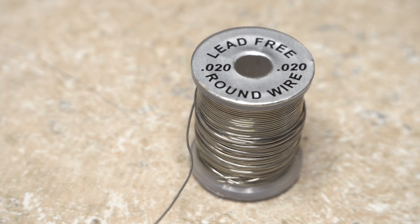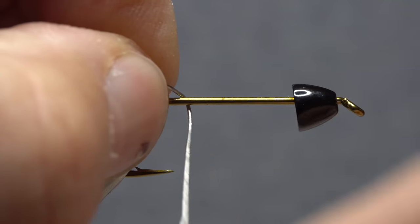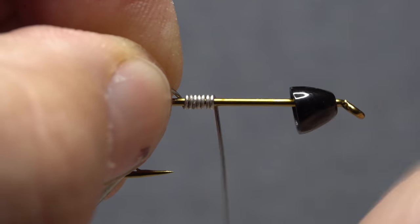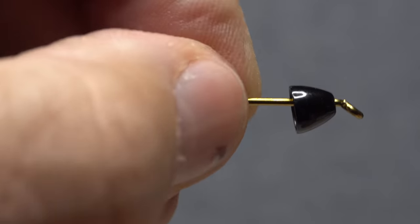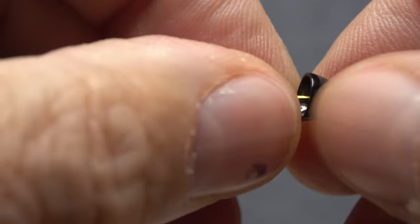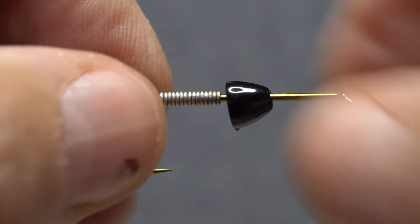.02 round lead-free wire is used to add weight and to help stabilize the cone on the hook. While holding the bitter end of the wire, take 15-20 wraps up the hook shank, then helicopter to break it off close. Make sure you can slide the wraps on the hook shank.